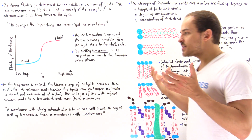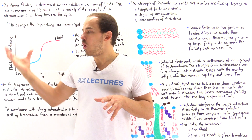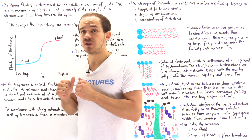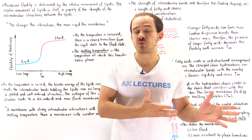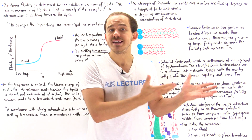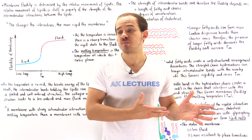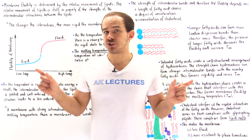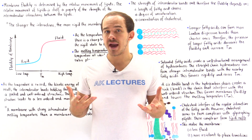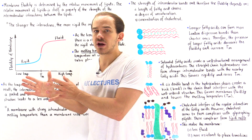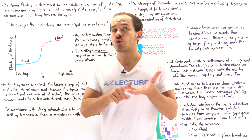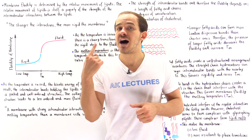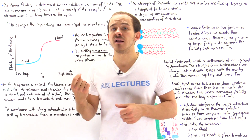Consider two membranes: one with strong intermolecular interactions and one with weak intermolecular interactions. How will their melting temperatures compare? The membrane with stronger intermolecular interactions will have a higher melting temperature.